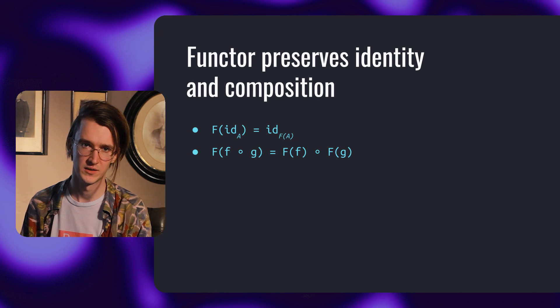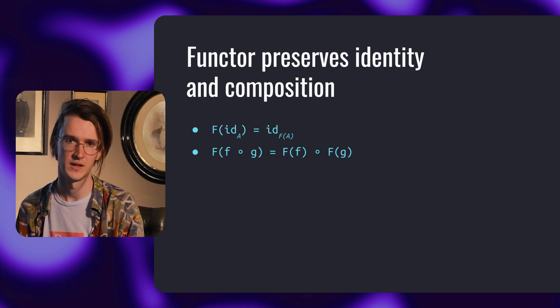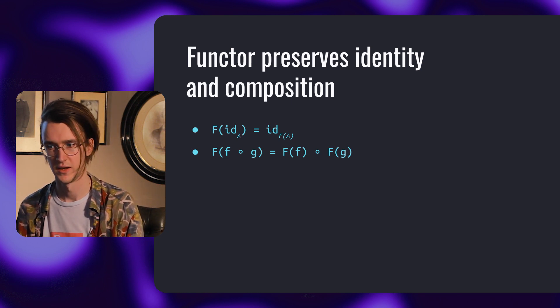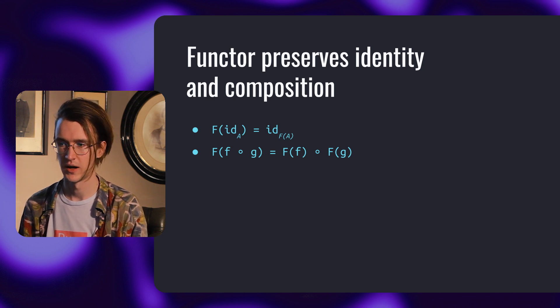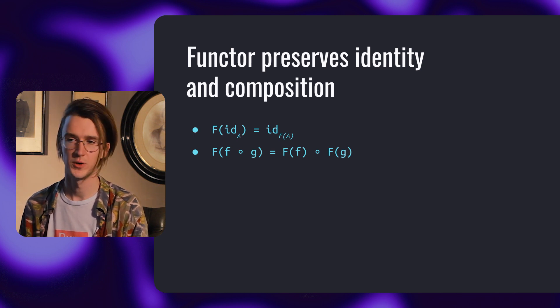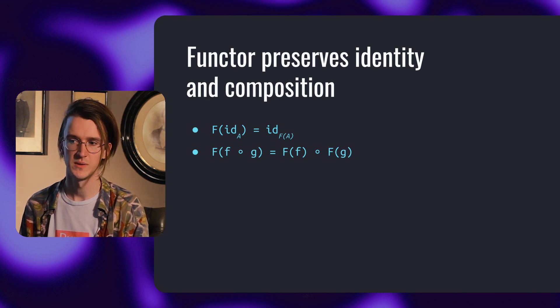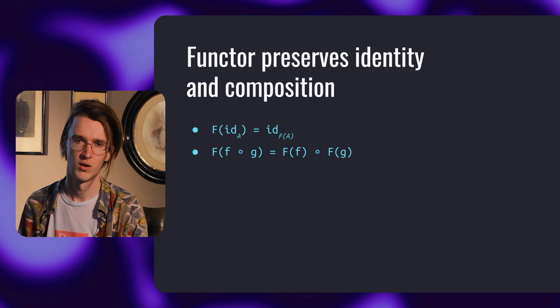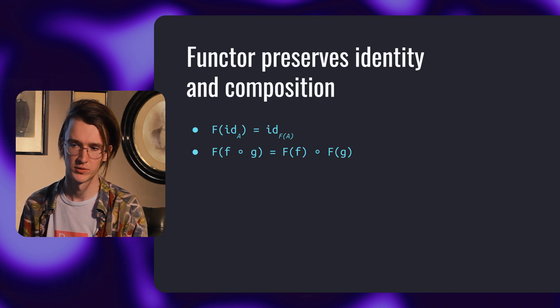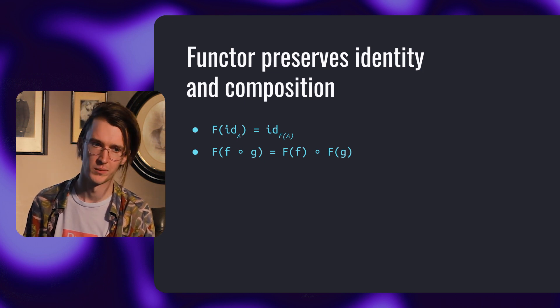F of identity on A is the same as identity on F of A. Given an identity morphism IDA on an object A, F of IDA must be the same identity morphism on F of A. And F of composition is F of F composed with F of G. Let's go one step further.